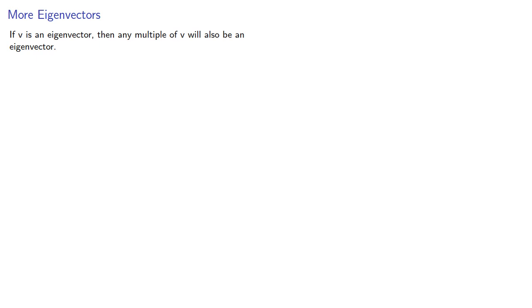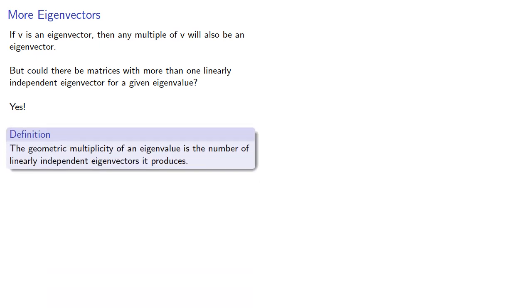If v is an eigenvector, then any multiple of v will also be an eigenvector. But could there be matrices with more than one linearly independent eigenvector for a given eigenvalue? And the answer is yes. And so we introduce the following definition: The geometric multiplicity of an eigenvalue is the number of linearly independent eigenvectors it produces.